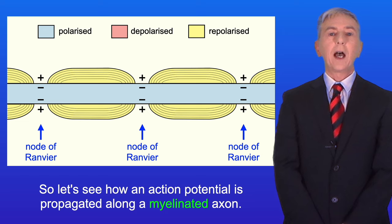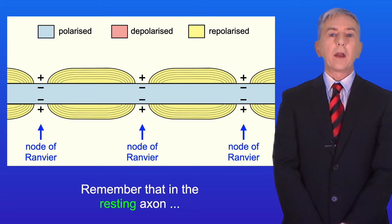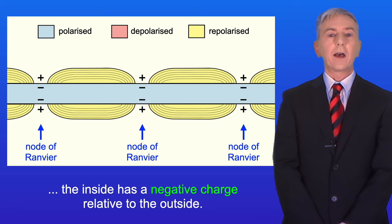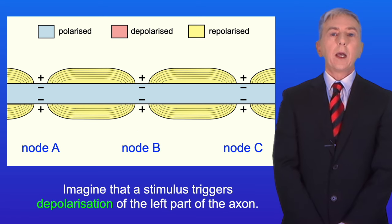So let's see how an action potential is propagated along a myelinated axon. Remember that in the resting axon the inside has a negative charge relative to the outside. Imagine that a stimulus triggers depolarization of the left part of the axon.